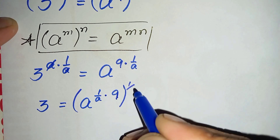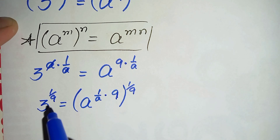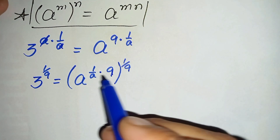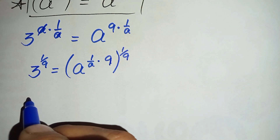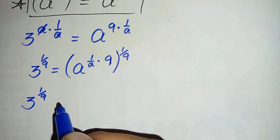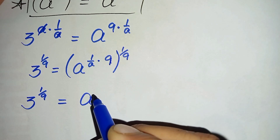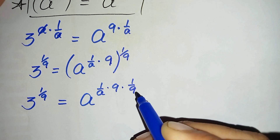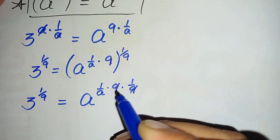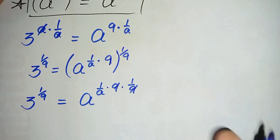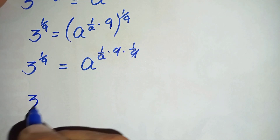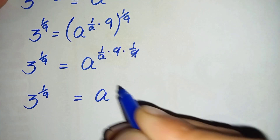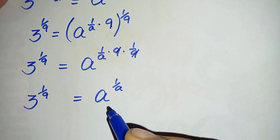So taking 1 over 9 as the power on both sides: the left hand side will be the same and on the right hand side we will use the exponential property and multiply 1 over 9 with the power. This will become 3 raised to power 1 over 9 is equal to a raised to power 1 over a times 9 times 1 over 9. Here we cancel the 9 with 9, so only 1 over a will be left in the power. This becomes 3 raised to power 1 over 9 is equal to a raised to power 1 over a.